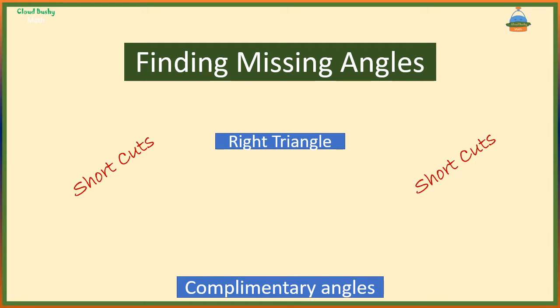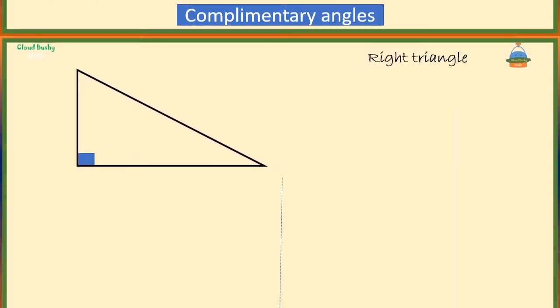We will focus on the right triangle, keeping in mind that the sum of the internal angles of any triangle is 180 degrees. So let's get into it.